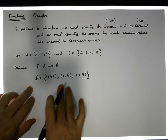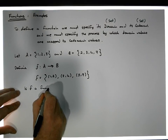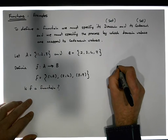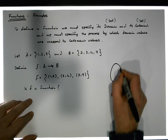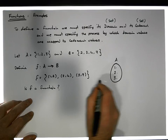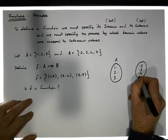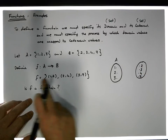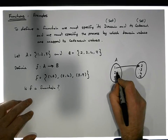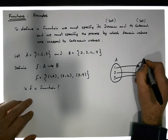Is f a function? Let's draw the mapping. A contains the values 1, 2, and 3, and B contains the values 2, 3, 4, and 7. The function maps: one is taken to two, two is taken to four, and three is taken to seven — all into set B.